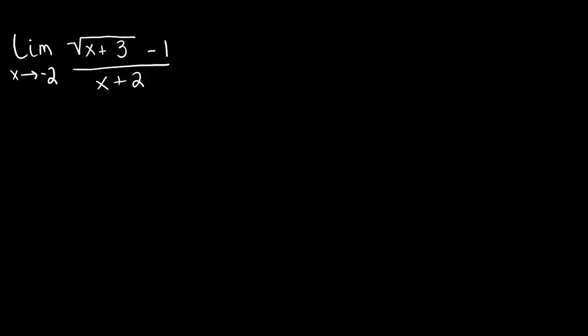In this video, we're going to look at evaluating a limit algebraically. The first step in our process for evaluating a limit algebraically should always be trying to evaluate the limit of our function as it approaches this c value that we have here. What that means is plugging in our c value in for x of our function. So let's come over here and do a little bit of scratch work and see what we get after plugging in negative 2 for x in our function.